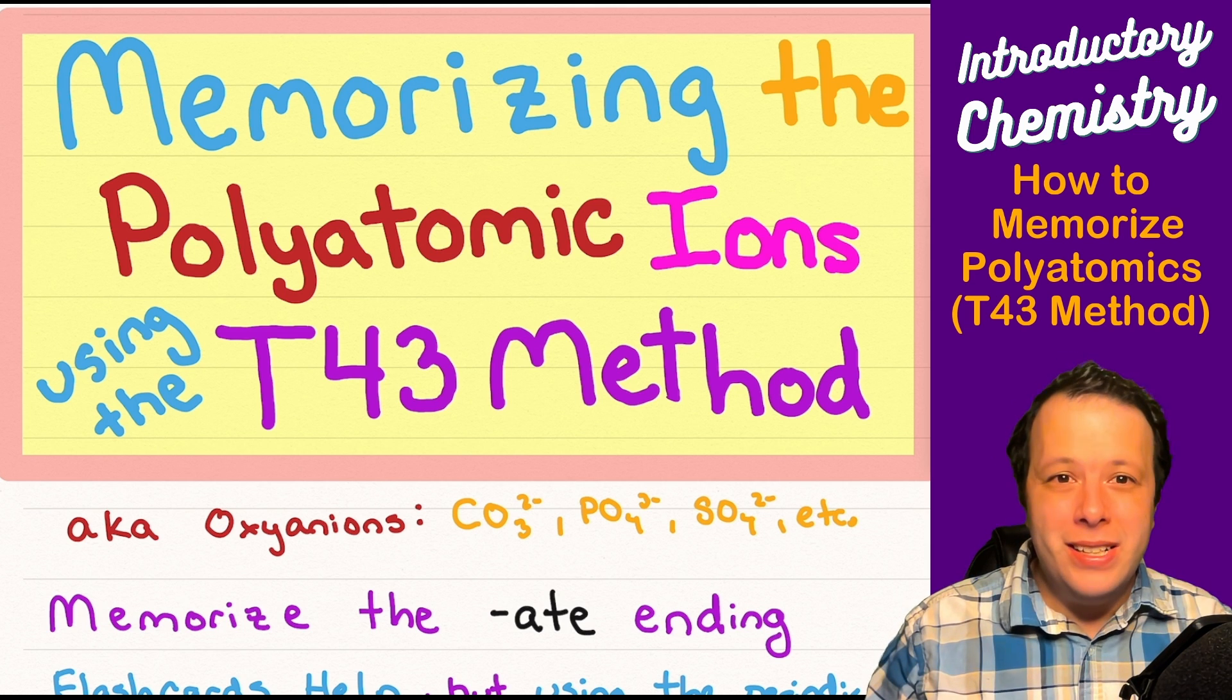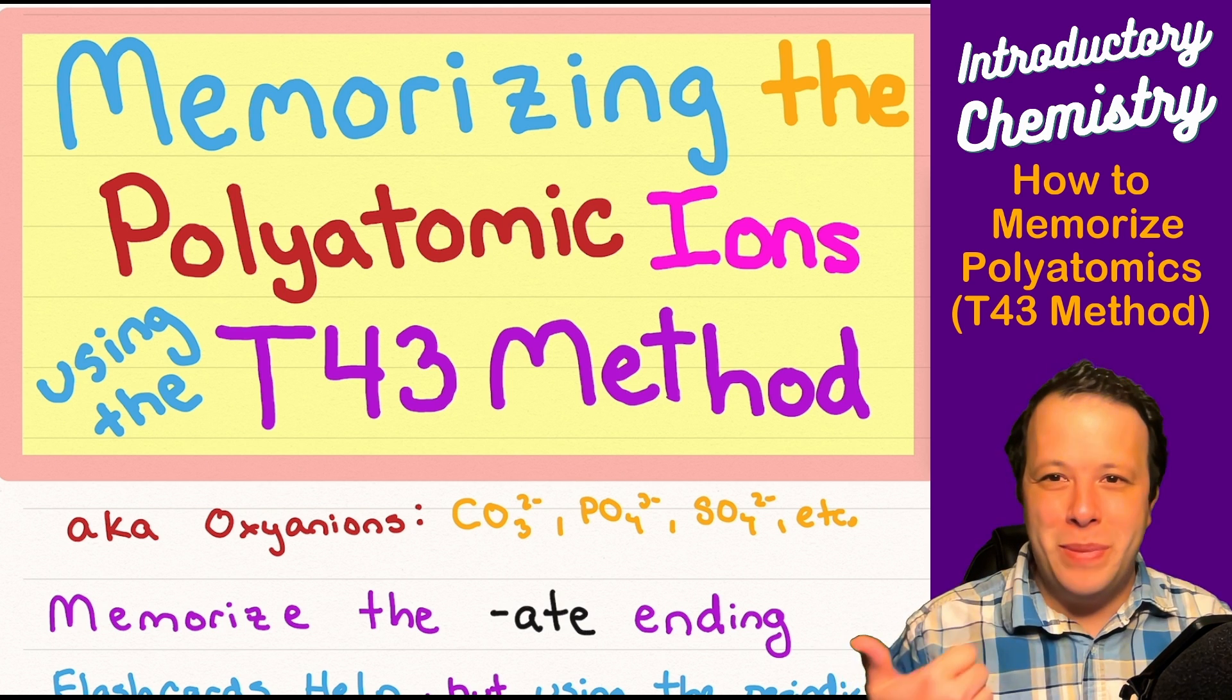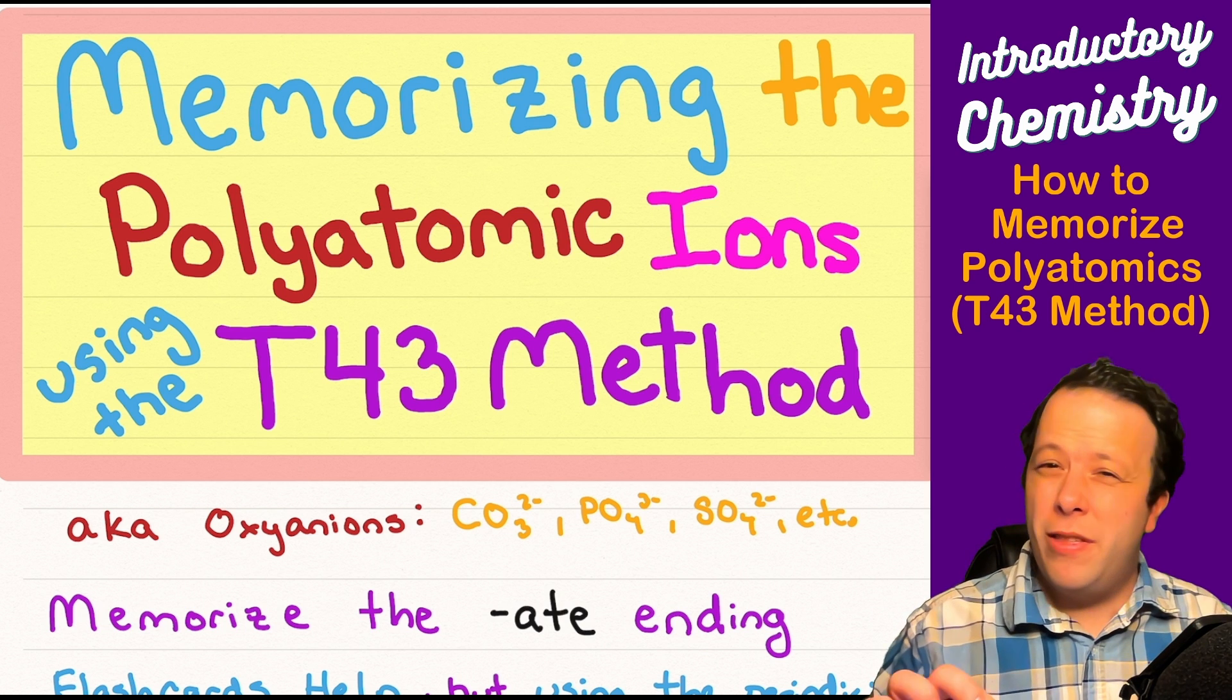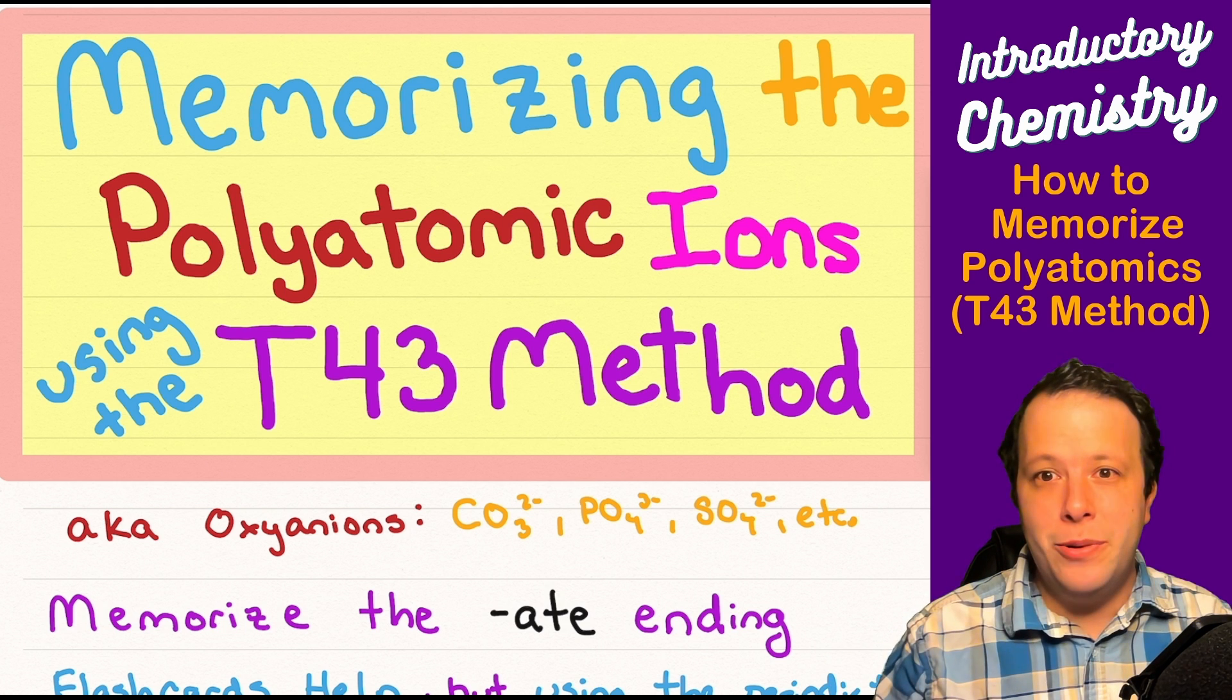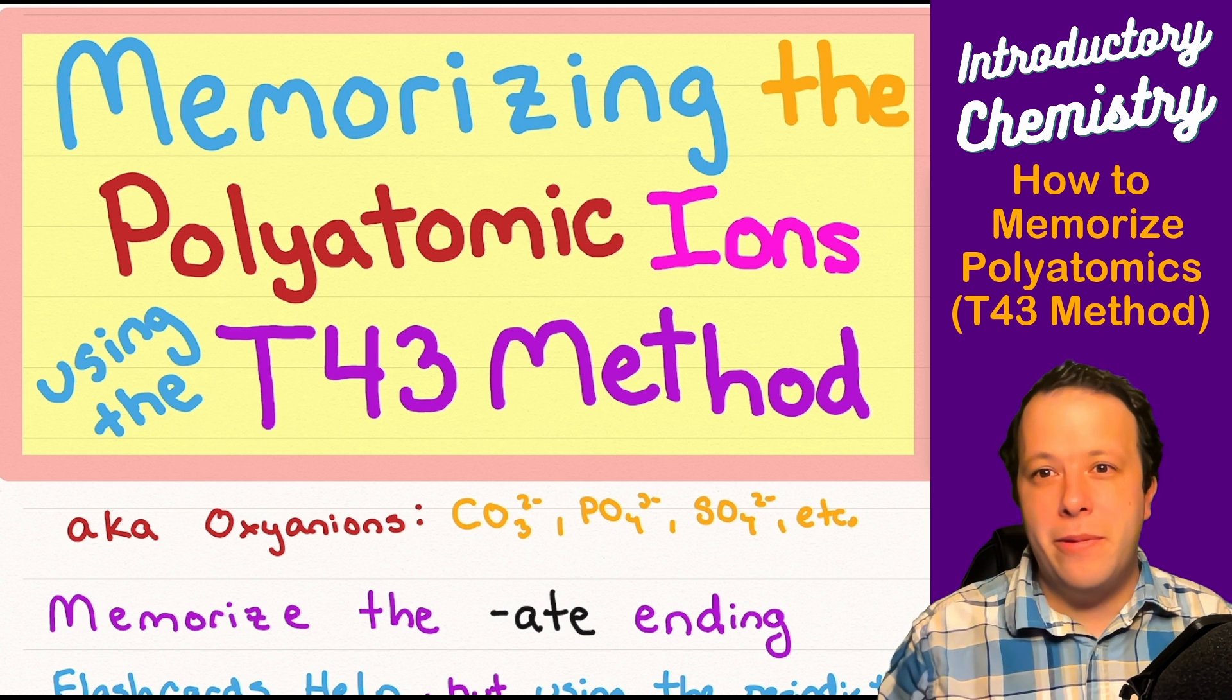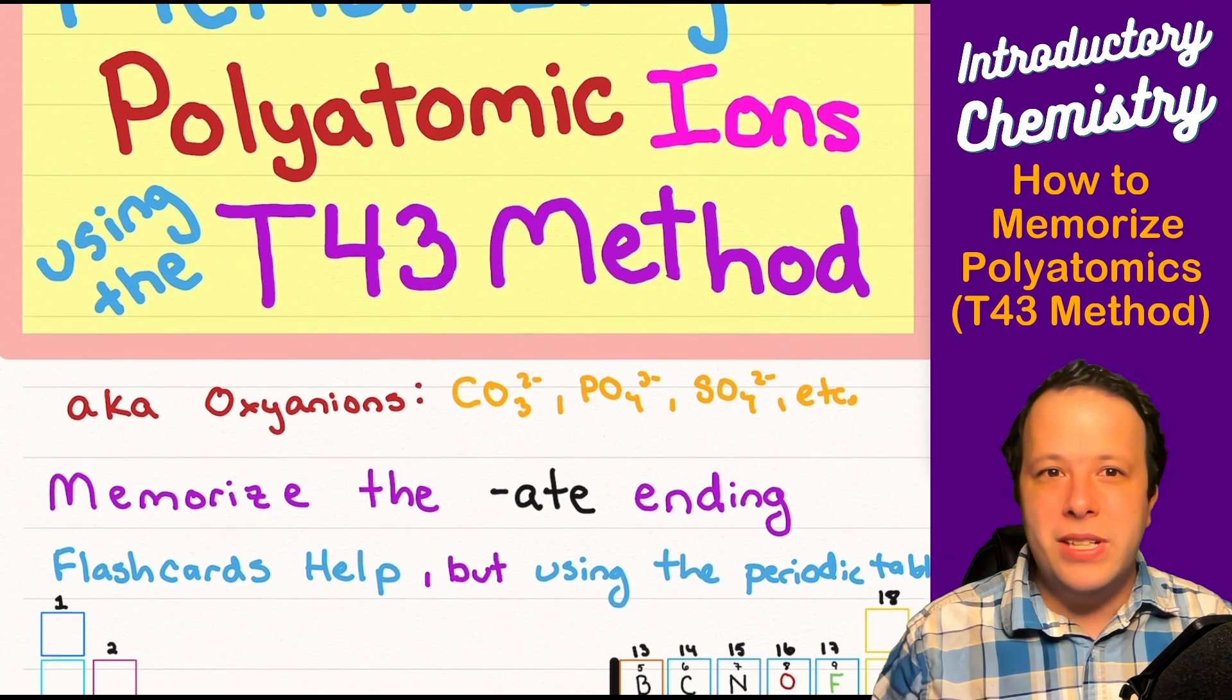Now the polyatomic ions the best way to memorize them is sometimes just simply use flashcards but sometimes we don't have the luxury of being able to remember all of them. I'm going to teach you today the T43 method which is something that you can easily find just by having a periodic table which is generally the only thing you are allowed to have on a lot of chemistry exams. So let's get into it.